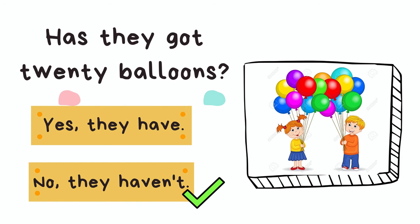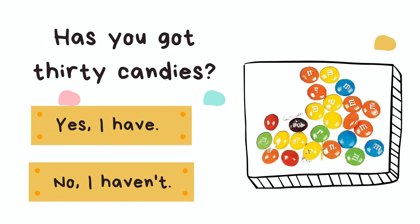Let's look at the third example. Have you got thirty candies? Let's count candies together. One, two, three, four, five, six, seven, eight, nine, ten, eleven, twelve, thirteen, fourteen, fifteen, sixteen, seventeen, eighteen, nineteen, twenty, twenty-one, twenty-two, twenty-three, twenty-four. Oh no, I have only got twenty-four. So the answer is no, I haven't. I have got twenty-four candies.